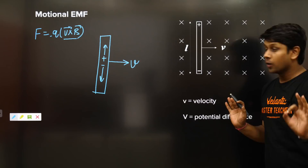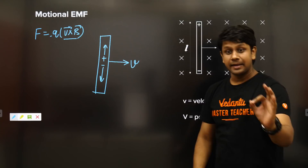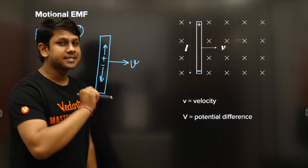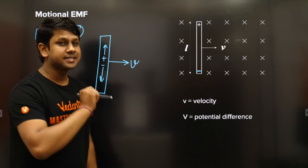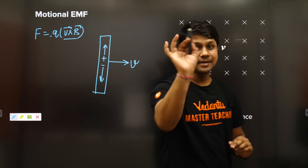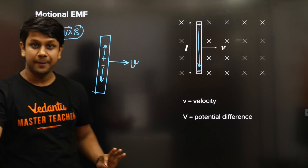Because of this separation: positives experience upward force and move up, negatives experience downward force and move down. Negatives accumulate at the bottom, creating a charge separation. When positive and negative charges are separated, an electric field develops — the electric field goes from positive to negative — so an electric field appears inside the rod due to this charge accumulation.